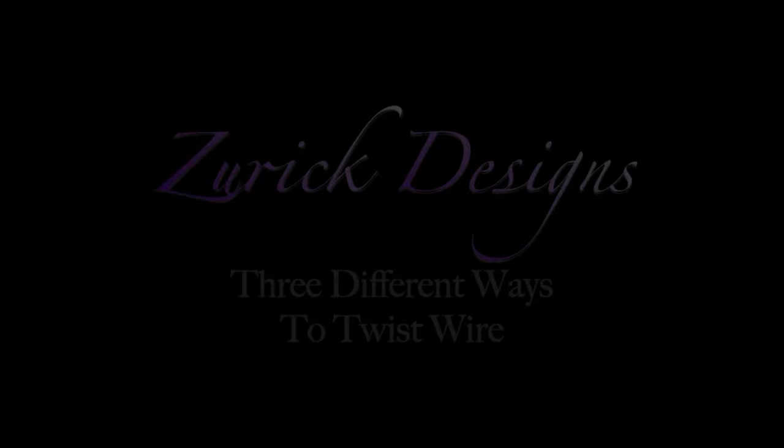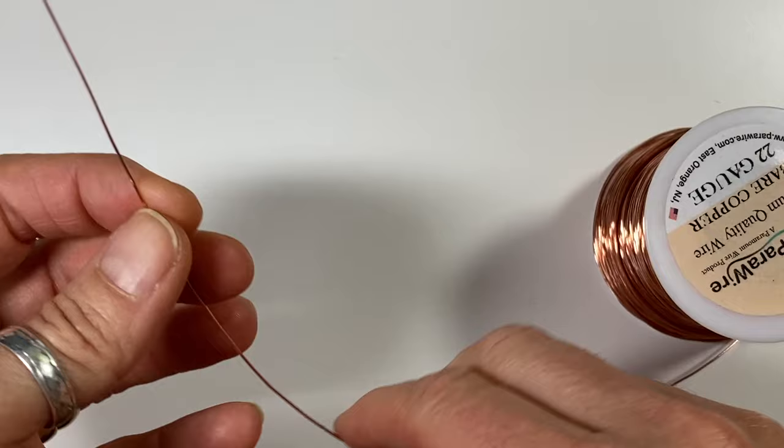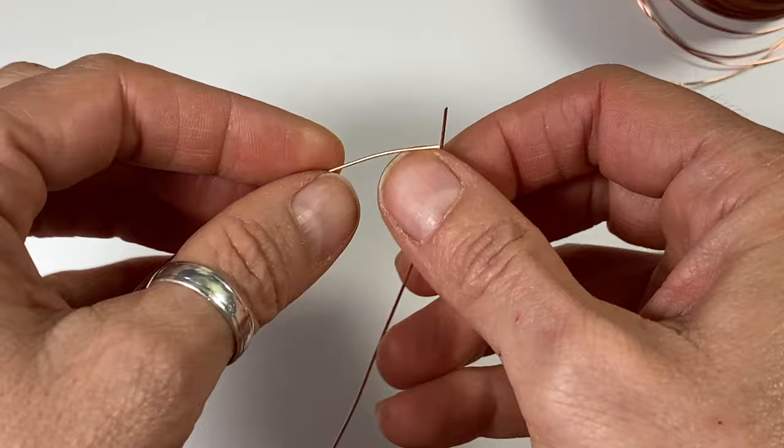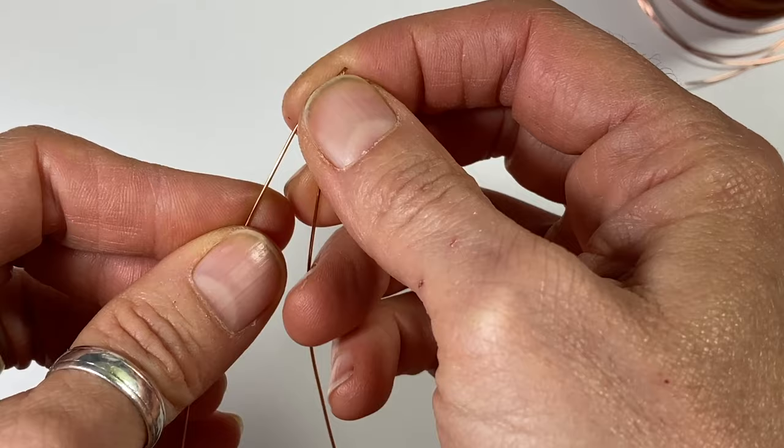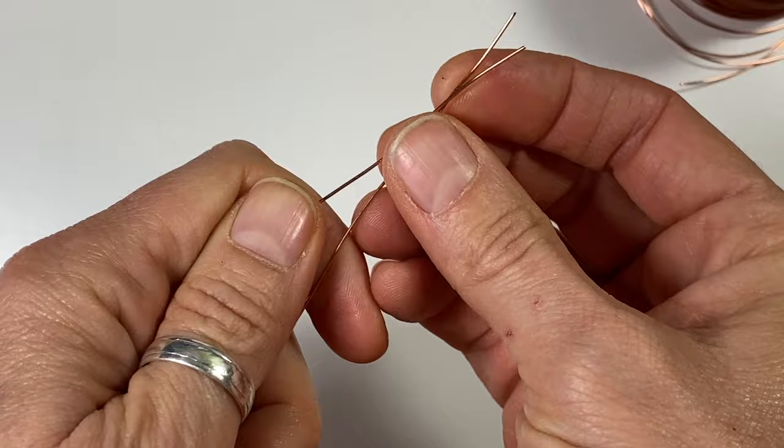For this video I'm going to use 22 gauge round bare copper wire. The first method is going to be totally by hand. If you're in a pinch and need some twisted wire and you don't have any tools available, just cut yourself off a piece. You're going to fold it in half, so kind of guesstimate how much length you'll need and cut twice that because you're going to be twisting it up.